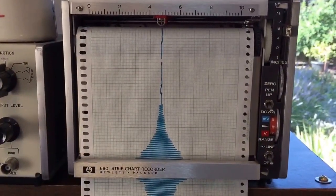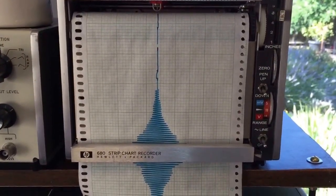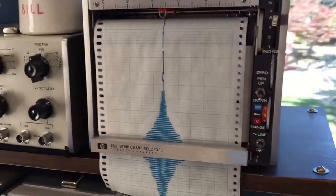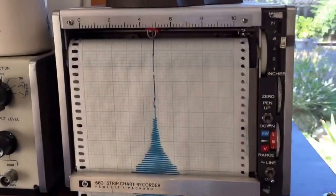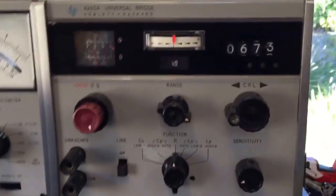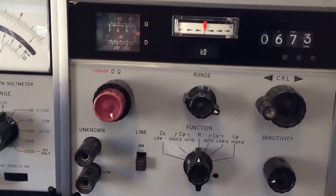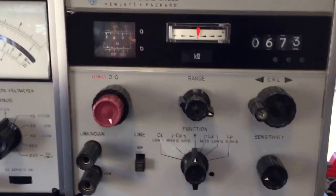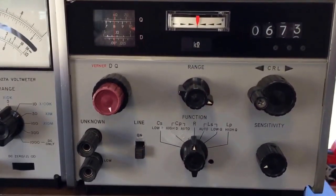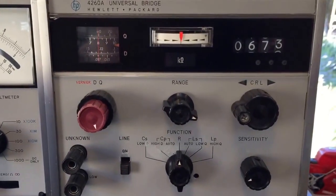Here's the HP 680, which was the Moseley 680 - the very first printer business they started with when they bought Moseley. They made these for a long time. Here's a 4260A universal bridge. This is a capacitance, inductance, resistance meter. This was made by YHP Japan, Yokogawa. It's got some complicated mechanisms in it to make it all switch back and forth.